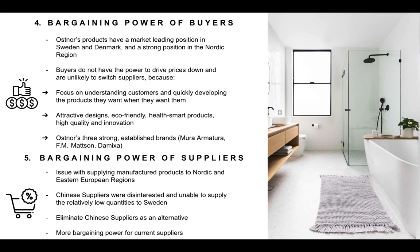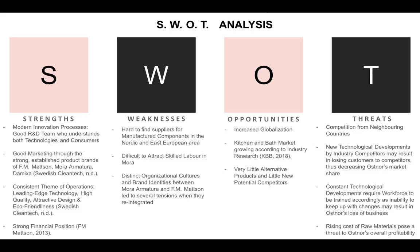Finally, we reach bargaining power of suppliers. OSNERS has an issue with supplying manufactured products to Nordic and Eastern European regions, as Chinese suppliers were both disinterested and unable to supply relatively small quantities to Sweden. This would eliminate Chinese suppliers as alternative suppliers, and would therefore simply give more bargaining power to OSNERS' current suppliers.